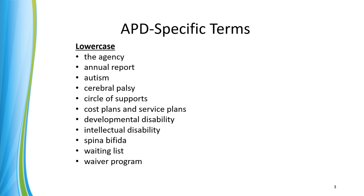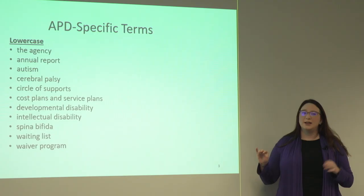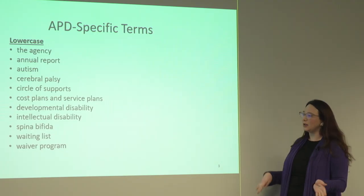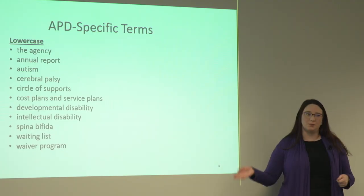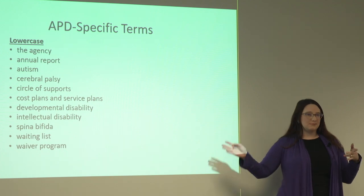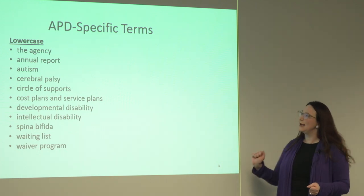Anytime we have a WSC annual report, lowercase. Autism in the middle of a sentence would obviously be lowercase. Cerebral palsy, circle of supports, cost plans and service plans. Developmental disability, intellectual disability, spina bifida. It is the waiting list, lowercase, and the waiver program. Make sense? Alrighty, next slide.